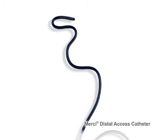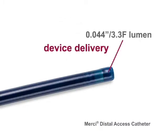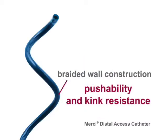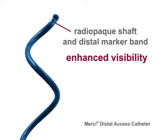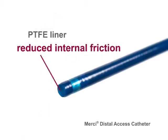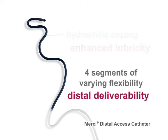The following is a list of features and benefits of using the Mercy Distal Access Catheter: 3.3 French lumen for device delivery; 4.3 French outer diameter; braided wall construction for pushability and kink resistance; radiopaque shaft and distal marker band for enhanced visibility; PTFE liner for reduced internal friction; hydrophilic coating of the distal section for enhanced lubricity; and 4 segments of varying flexibility for distal deliverability.